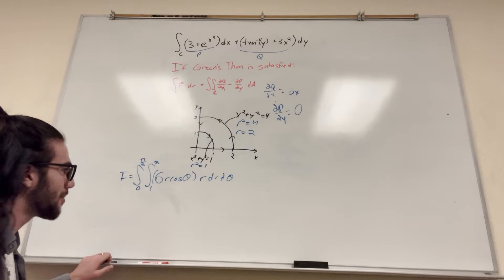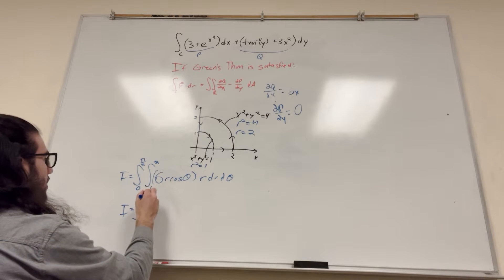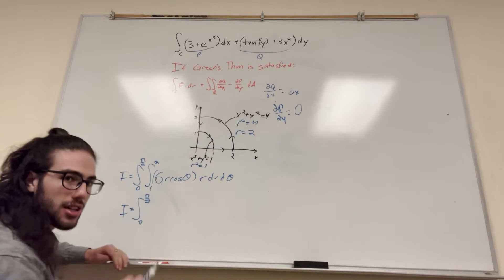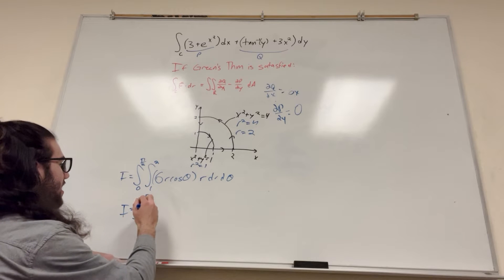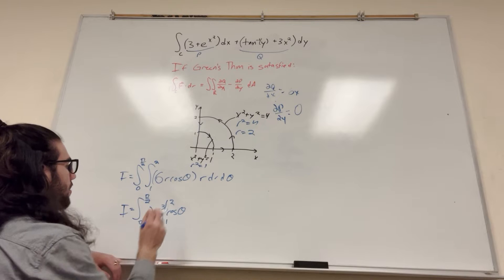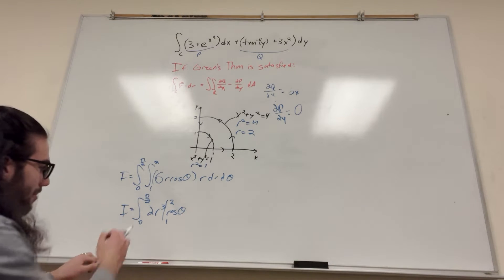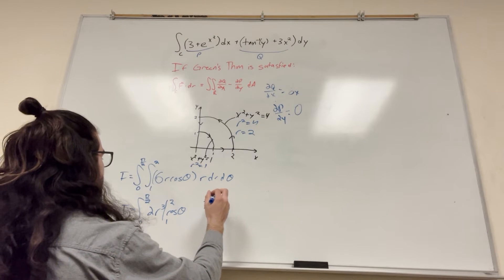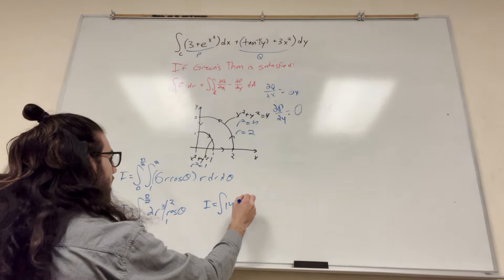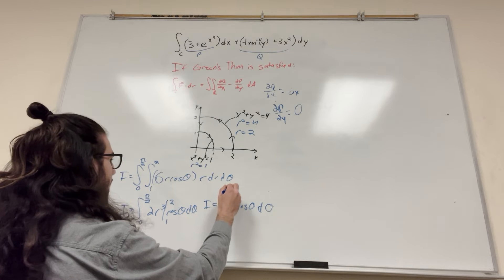So I'm just going to go ahead and solve it. So pi over 2, these r's are going to come together. So it's going to be r squared. So it's going to turn into r cubed over 3. So it's going to be 2r cubed cosine of theta. And this is going to be on the interval from 1 to 2. So it's going to be 8 minus 1. So it's going to be 7 times 2 is 14. So our integral is going to be equal to 14 cosine of theta.